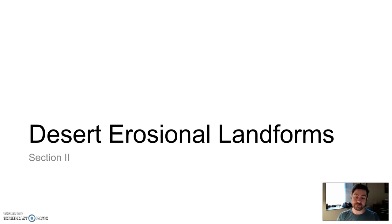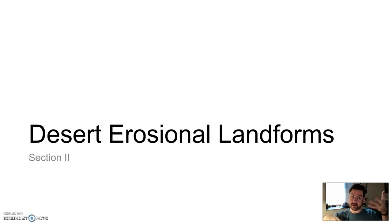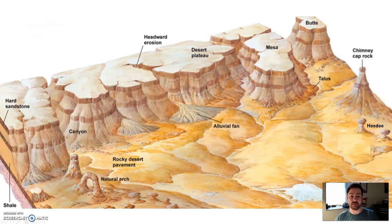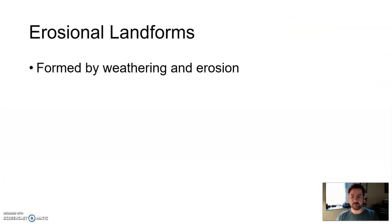The first type of landform we'll talk about are erosional landforms. These are formed by material being taken away, eroded away, moved away — and what's left behind creates a new landform. Some of those types of landforms include things like plateaus, mesas, and buttes, hoodoos, natural arches, just to name a few. These are all formed by weathering and erosion — the breaking down and movement of material.